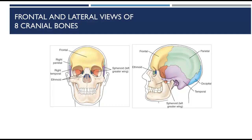Here we have two different views — a frontal and a lateral view of the skull. These are very nicely color-coded pictures that help you identify where all of the cranial bones are and where the articulations are. Highly suggest using these colored pictures to study.